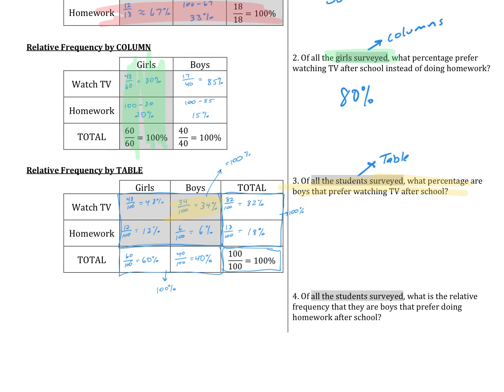Pause the video and try the last one on your own. For the last question: of all the students surveyed — again by table — what is the relative frequency of boys who preferred doing homework after school? That would be boys who do homework, which is 6%.